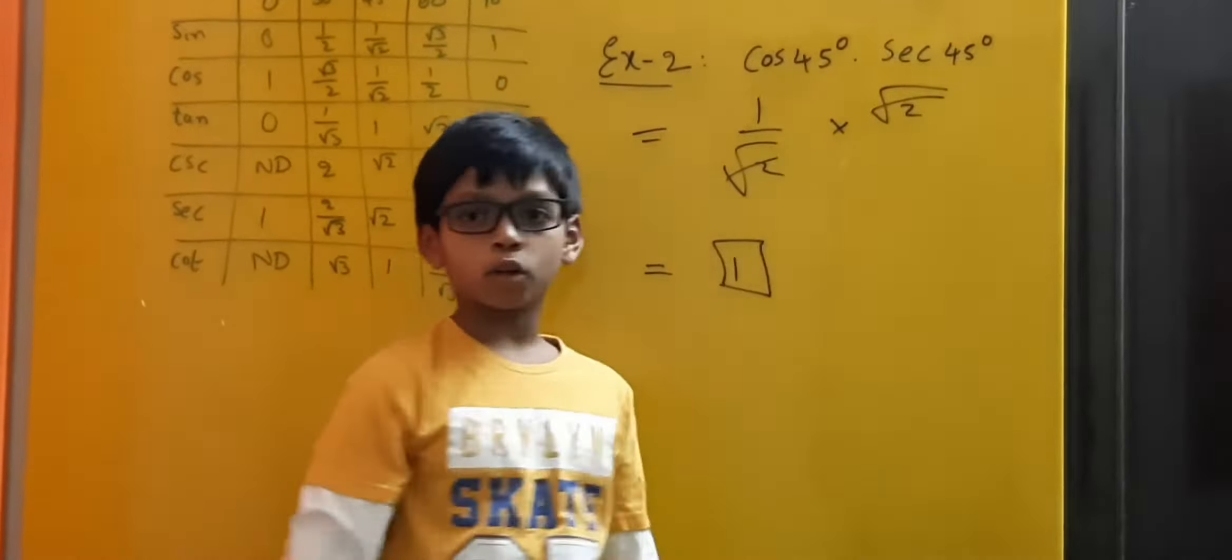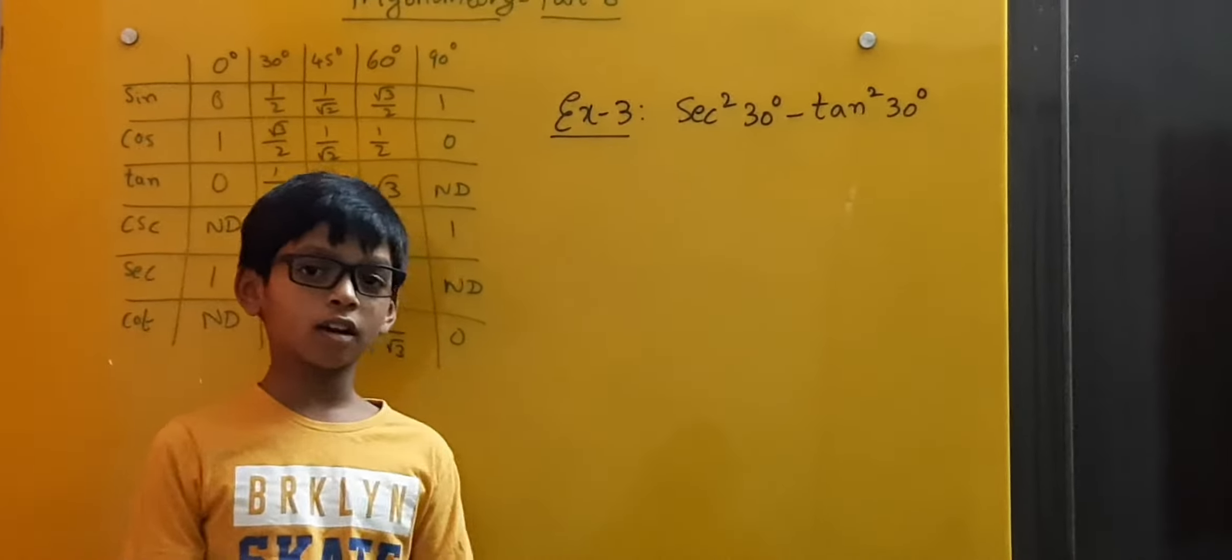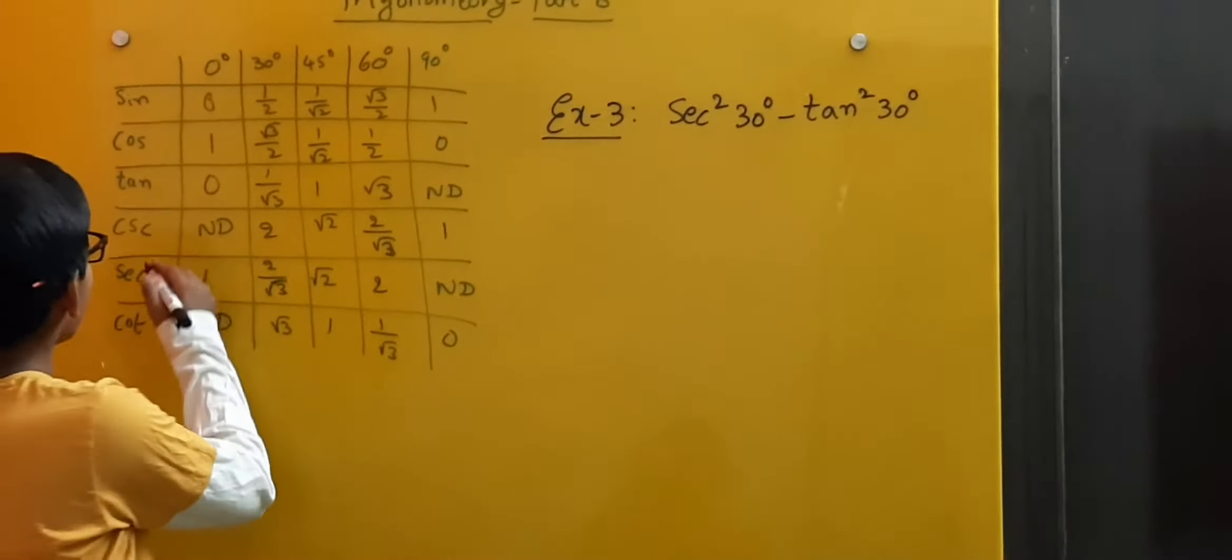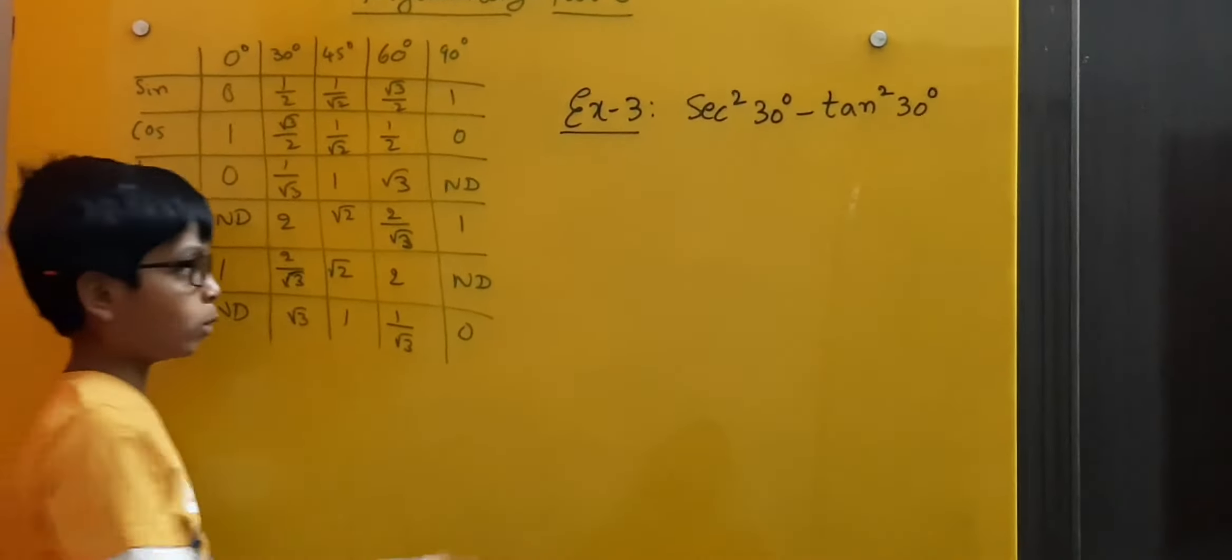Now let us solve another example which says secant square 30 minus tan square 30. Here we know that secant 30 degrees is equal to 2 by root 3.